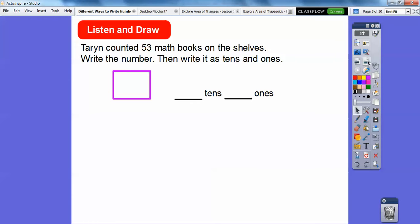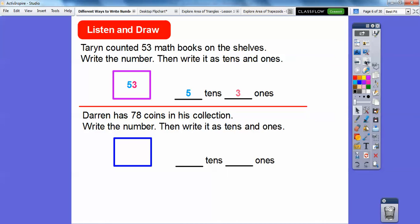So Taryn counted 53 math books on shelves. Oh boy, that sounds exciting, huh? So write the number and then write it as tens and ones. So 53 is 53, just like that. So this is the tens right here, and this is the ones. So there's five tens and three ones right there.